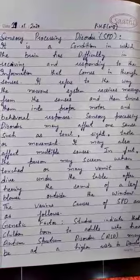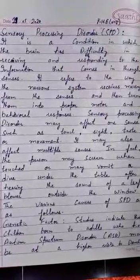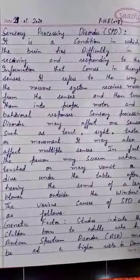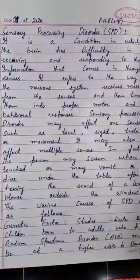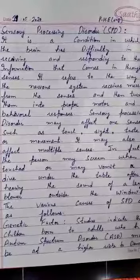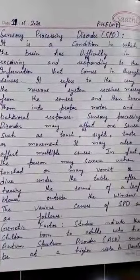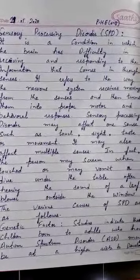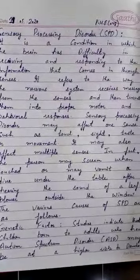Good morning students. Today in physical education, our topic is sensory processing disorder. Sensory processing disorder, or SPD, is a condition in which the brain has difficulty in receiving and responding to the information that comes in through the senses. It refers to the way the nervous system receives messages from the senses and then turns them into proper motor and behavioral responses.